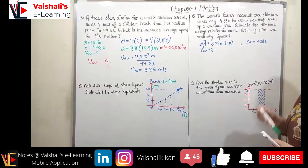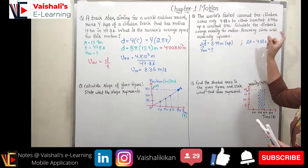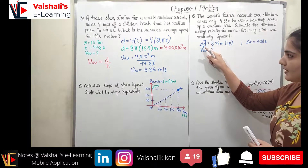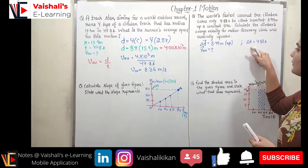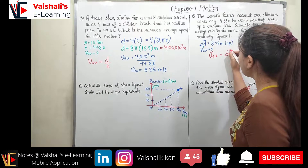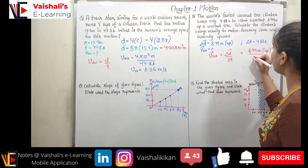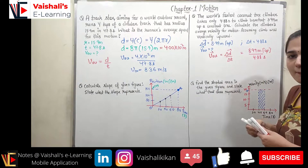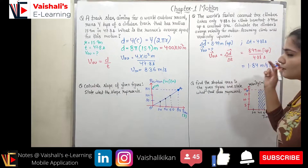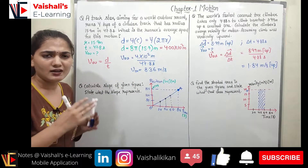Problem 2: The world's fastest coconut tree climber takes 4.88 s to climb 8.99 m vertically upward. Find average velocity. Displacement = 8.99 m upward; time = 4.88 s. Average velocity = ΔD / ΔT = 8.99 / 4.88 ≈ 1.84 m/s upward. Always specify direction when dealing with velocity; direction can be omitted for speed.